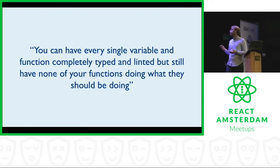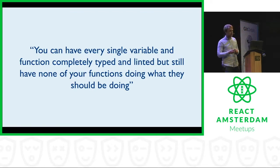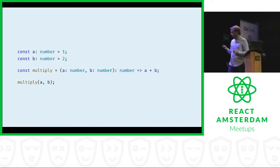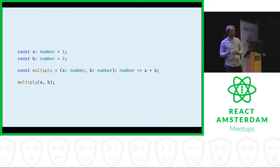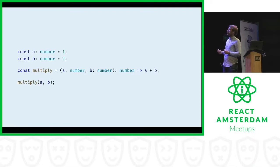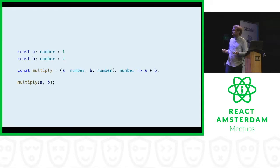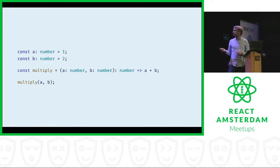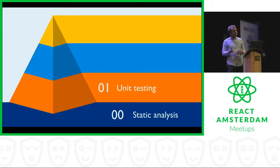But you can have every single variable and function completely typed and linted, and still have none of your functions doing what they should be doing. For example, here's a simple function which should multiply two numbers — I've got it perfectly annotated with Flow, the types are correct, it returns a number. But when you look closely, it doesn't multiply but does an addition. Linting would say no problem, it's perfectly fine. And Flow would say great, push this to production. That's where the second layer of testing comes in: unit tests.